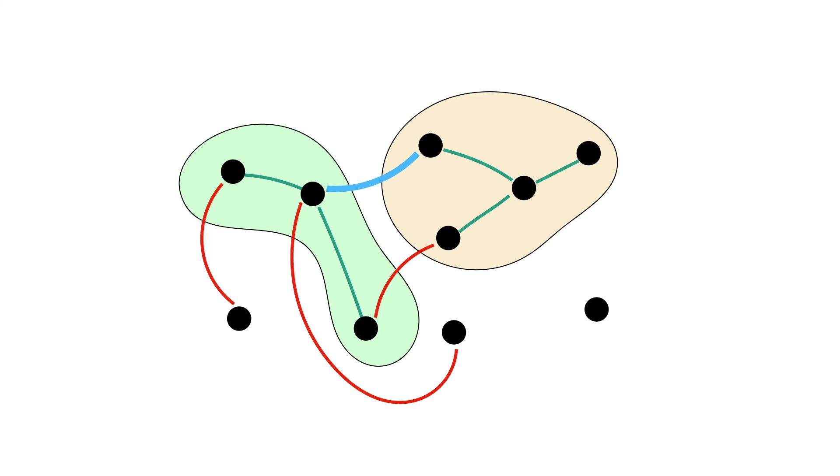Now one thing to observe is that the same blue edge may not be the safe edge for the other component that it is incident to. So this yellow component here, it may have a different safe edge going out of it to some other component. But notice that once you do collect all the safe edges incident on all the components, then they must together be acyclic. Imagine that you do have a cycle among the safe edges. Just start traveling on this cycle.